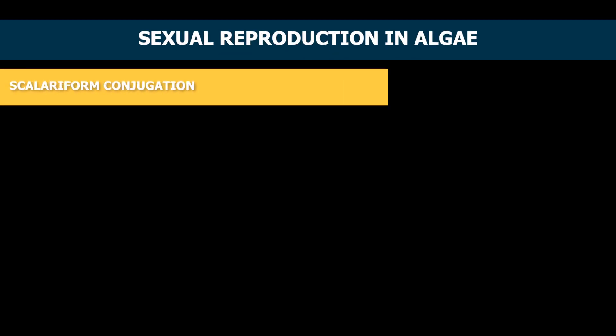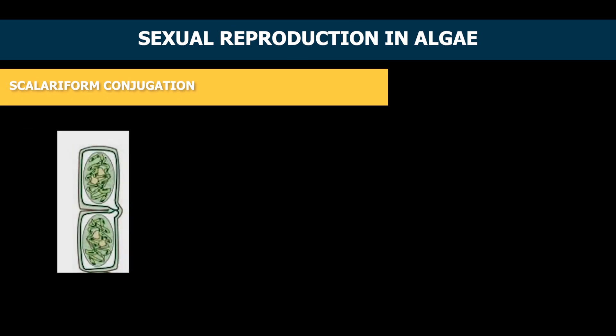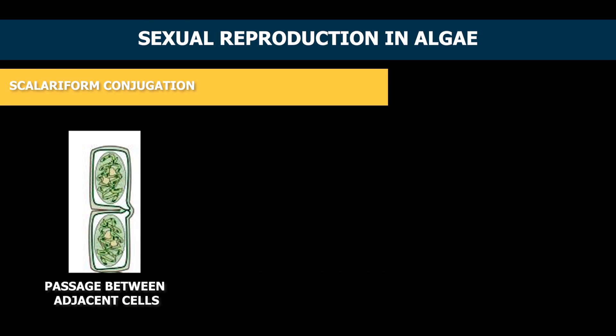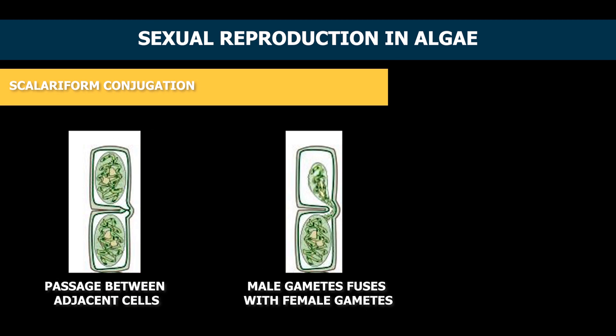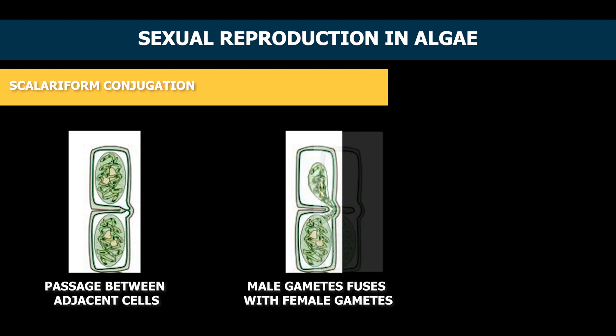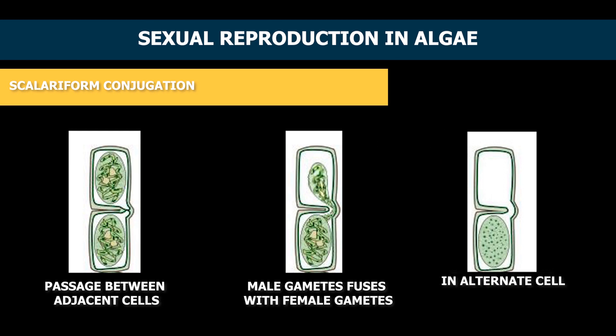Sexual reproduction can be of two types. 1. Scaliform conjugation. In this process, male and female gametes are obtained from different filaments in the same algae. At the microscopic level, algae are formed by a chain of filaments. During scaliform conjugation, filaments with male and female gametes get connected and a new plant is formed.